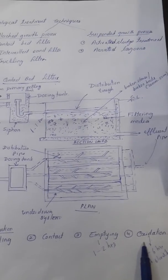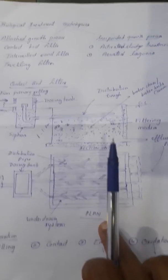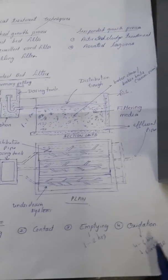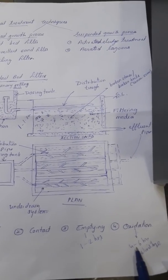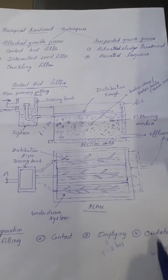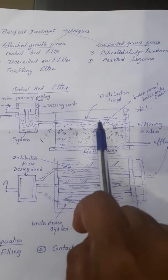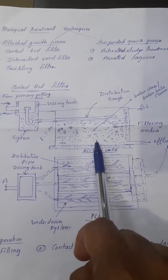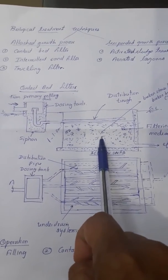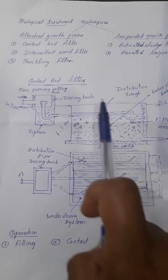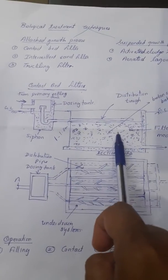The fourth operation is oxidation. In this oxidation process, the contact bed is allowed to stand empty for 4 to 6 hours. During this period of rest, atmospheric air enters into the void space of the contact media, thus supplying oxygen to the aerobic bacteria, which results in the oxidation of organic matter present in the film. This is the working of this contact bed filter.